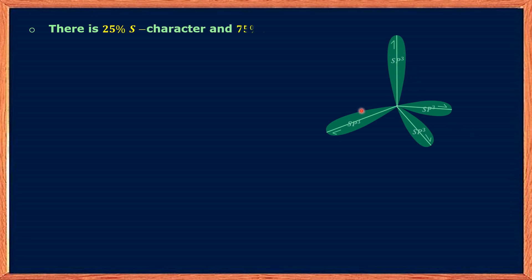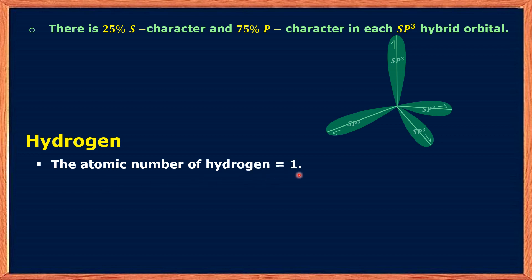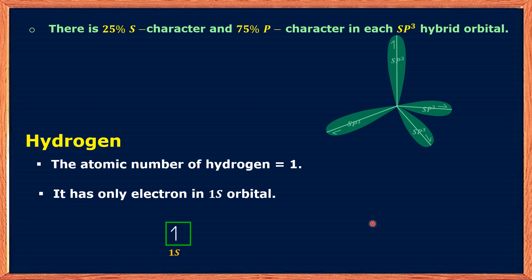In SP3 hybridization, each SP3 hybrid orbital has 25% of S character and 75% of P character. Now let us look into the electronic configuration of hydrogen atom. The atomic number of hydrogen is 1. It has only one electron in its 1s orbital, and the shape of the 1s orbital is spherical.